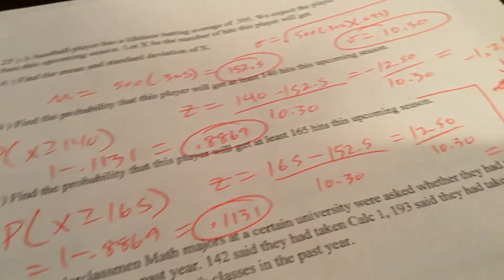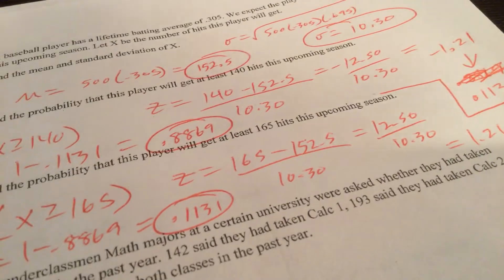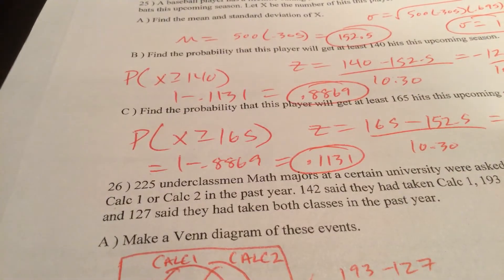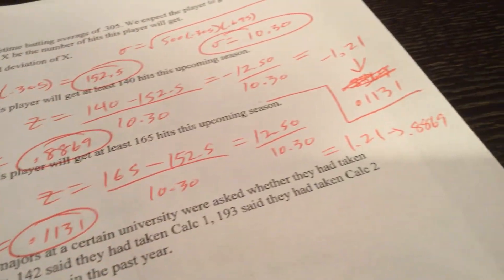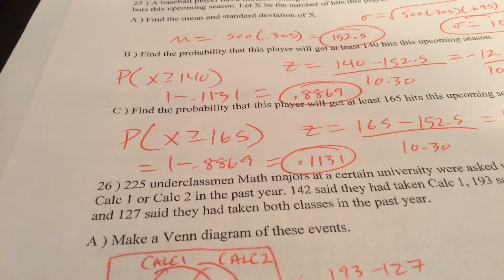Find the probability a player will get at least 165 hits this upcoming season. That's probably going to be lower because this would be a better than average result. Probability that X is greater than or equal to 165. The Z score is the opposite of what we just got. I'm going to do 1 minus that 88.69 to get 1131.